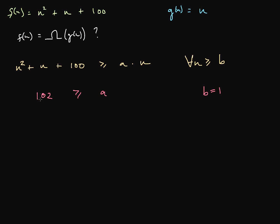then f of n is big omega g of n. We'll write that like this: n squared plus n plus 100 is big omega g of n. We can say that f of n is big omega of n.